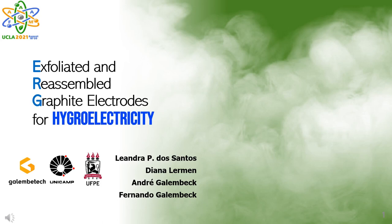This presentation will introduce a new 2D macroscopic material and its application to energy harvesting. The material is exfoliated and reassembled graphite, nicknamed ERG. It has previously allowed us to make flexible, inexpensive and corrosion-resistant electrodes for various purposes. This presentation will show the application for harvesting energy from atmospheric moisture, which we call hydroelectricity.